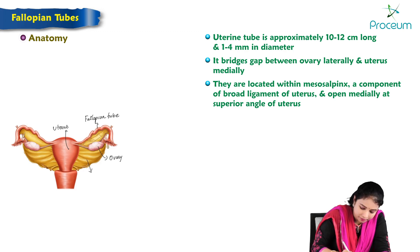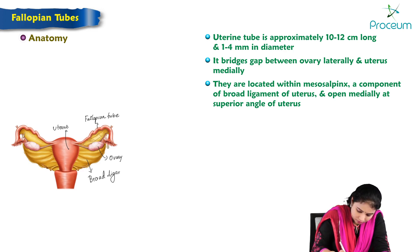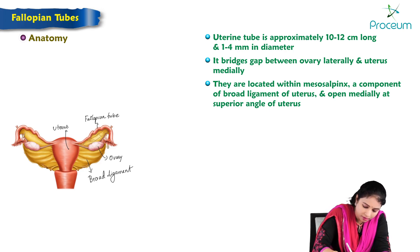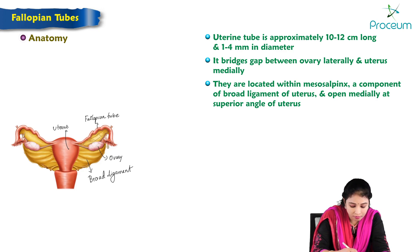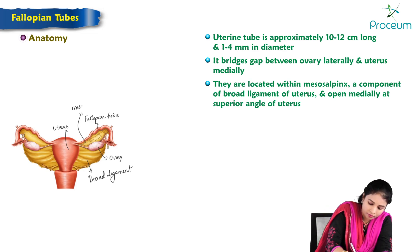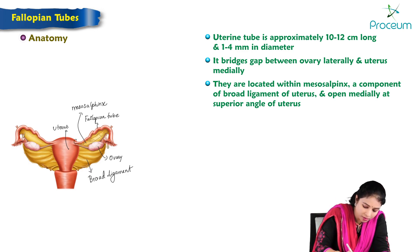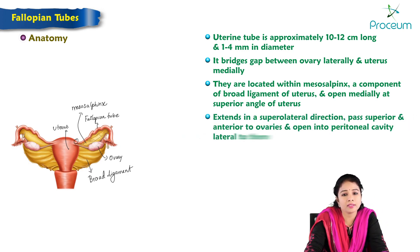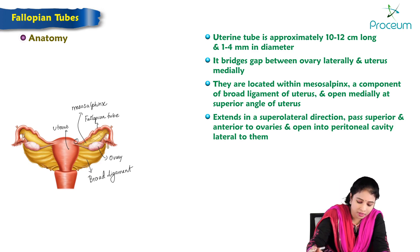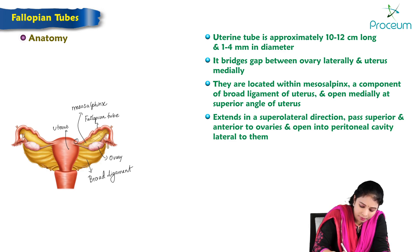Here is the broad ligament, where the fold of peritoneum — the continuation of the broad ligament — forms the mesosalpinx. It opens medially at the superior angle of the uterus. The fallopian tube extends in the superolateral direction, passes superior and anterior to the ovaries, and opens into the peritoneal cavity lateral to them.